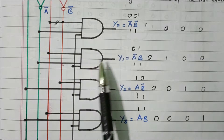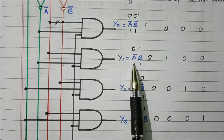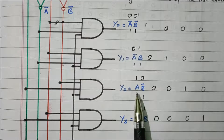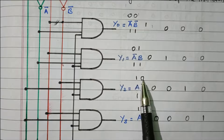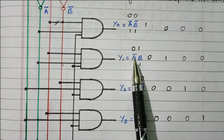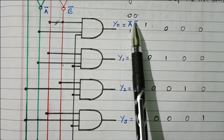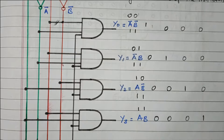Accordingly, the inputs are connected: A-bar and B-bar are connected to the Y0 gate; A-bar and B are connected to the Y1 gate; A and B-bar are connected to the Y2 gate; and A and B are directly connected to the Y3 gate. So automatically we are getting the 4 possible outputs.